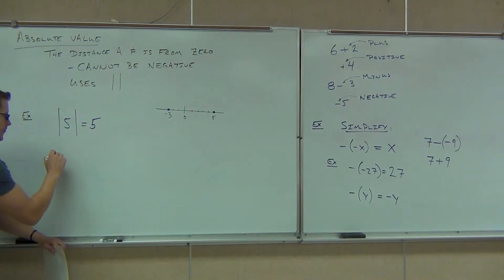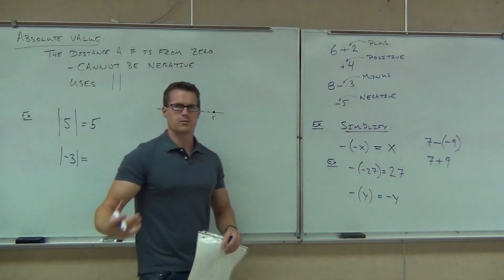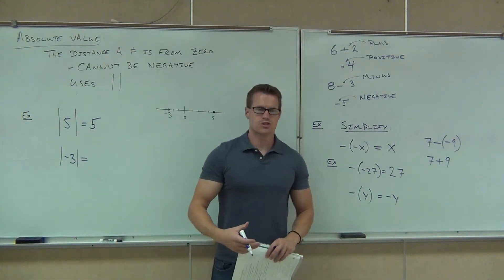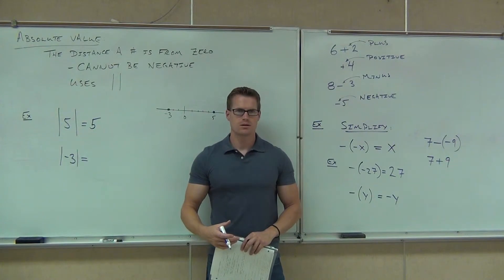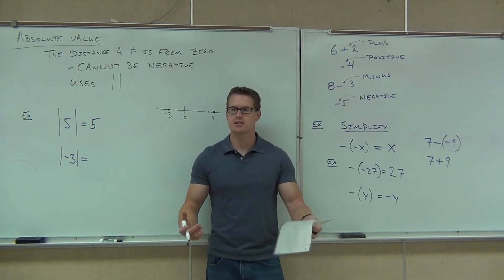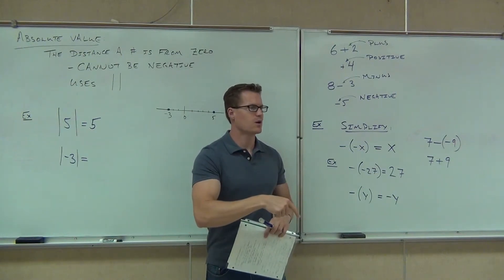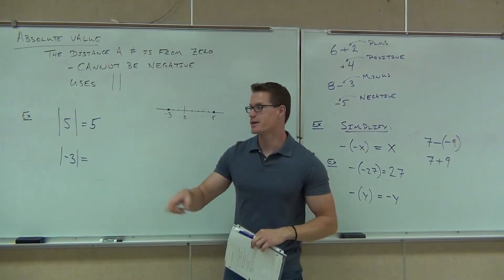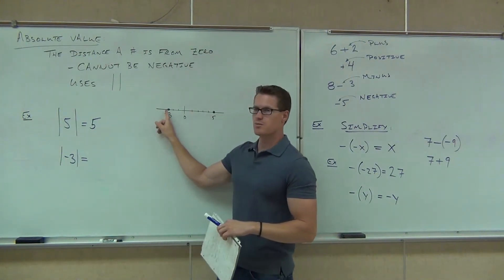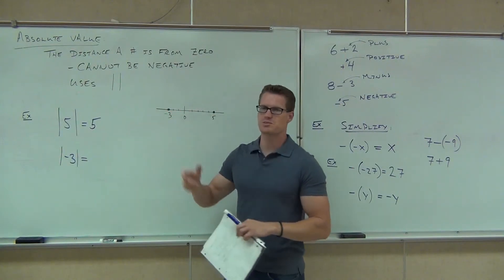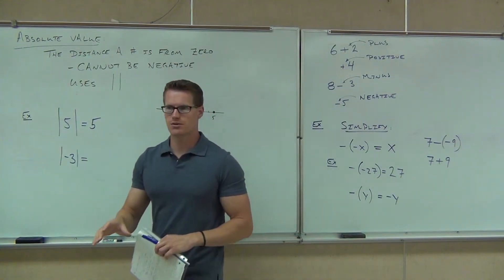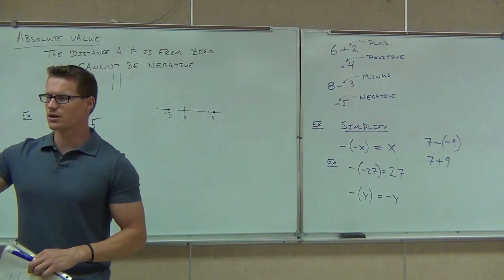Okay, but how about this one? How many units is negative three away from zero? Three. So we're not going to put negative three? No. No. It can't be a negative. It's saying this. Start at negative three, count to zero. How many spaces do you have to move, basically, is what it's saying. So we go, all right, how many spaces do I have to move to get to zero? One, two, three spaces. The absolute value of negative three is therefore three.